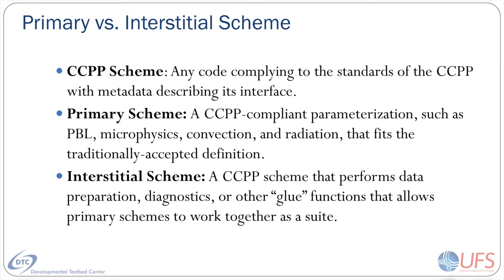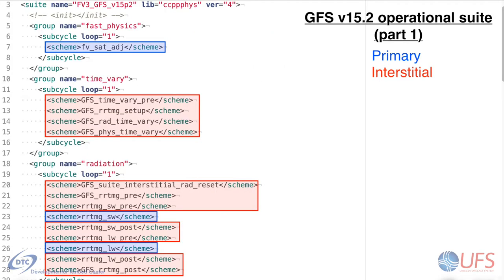An interstitial scheme can be thought of as glue code that might be needed to, for example, prepare data needed by another scheme, or perhaps calculate some optional diagnostics. Existing CCPP suites weave together both kinds of schemes.